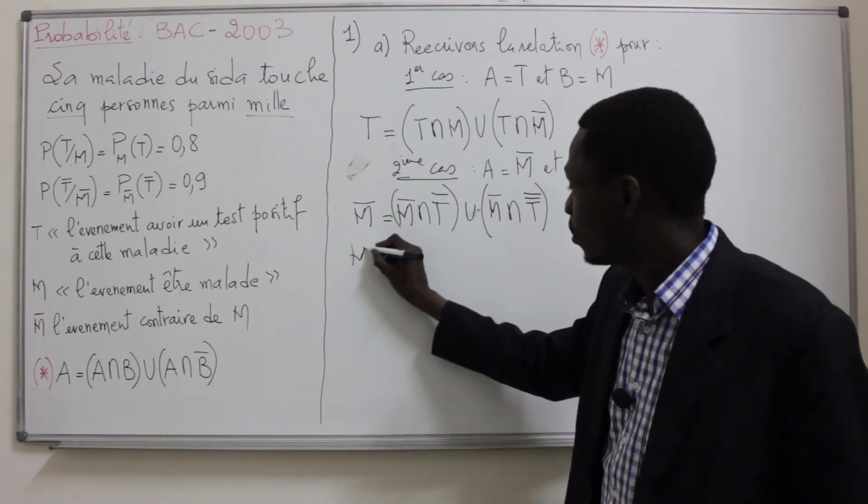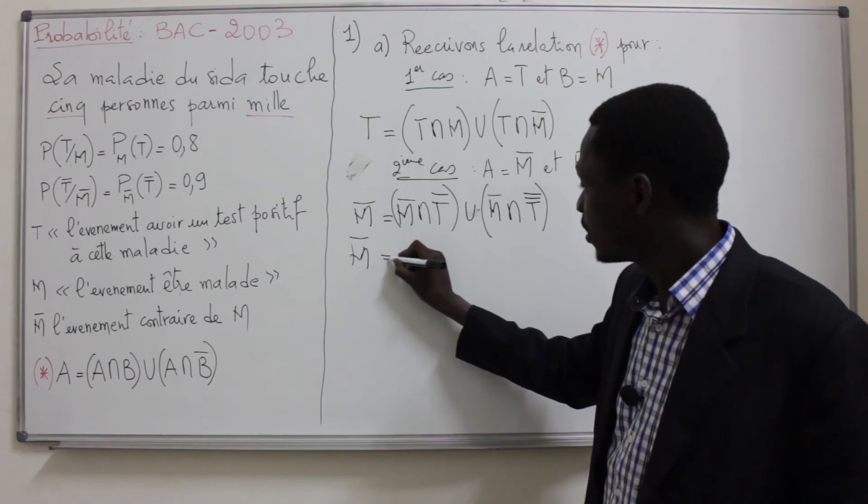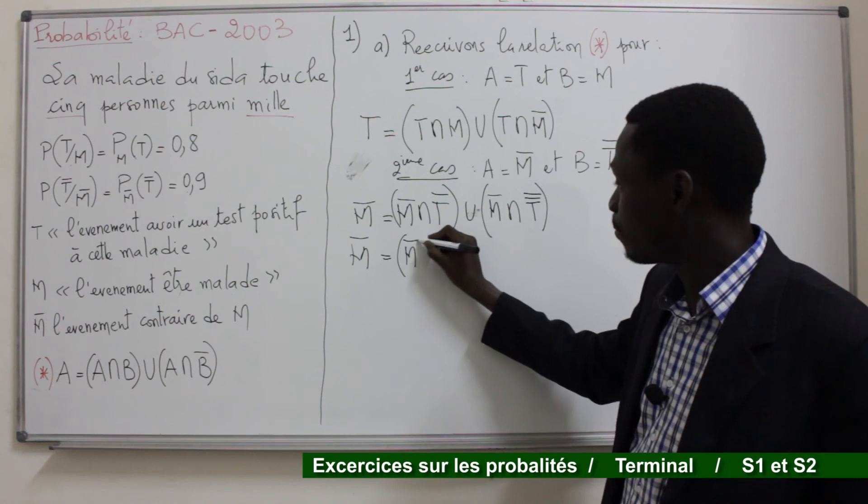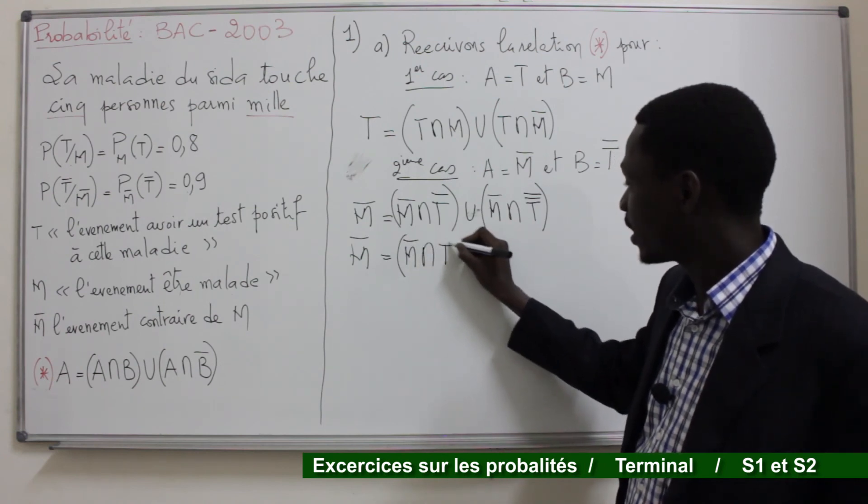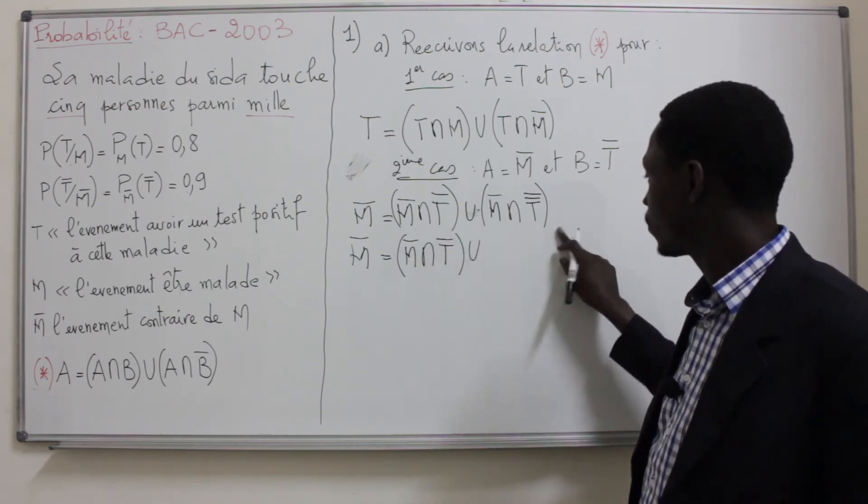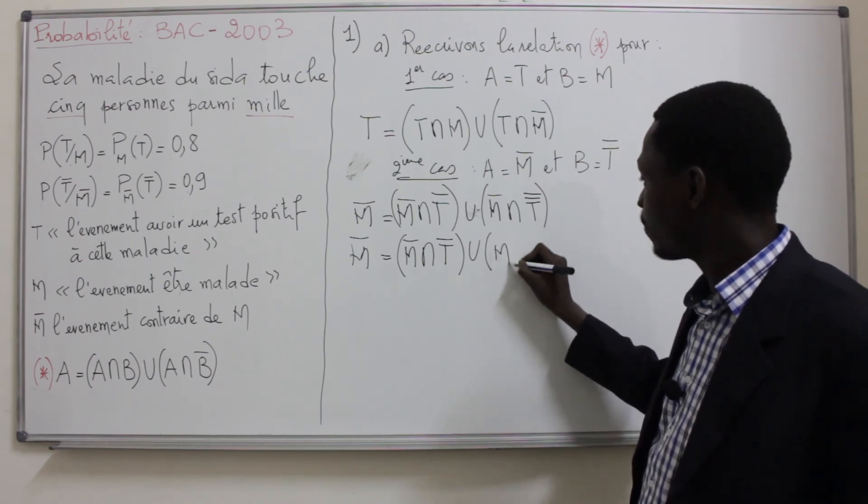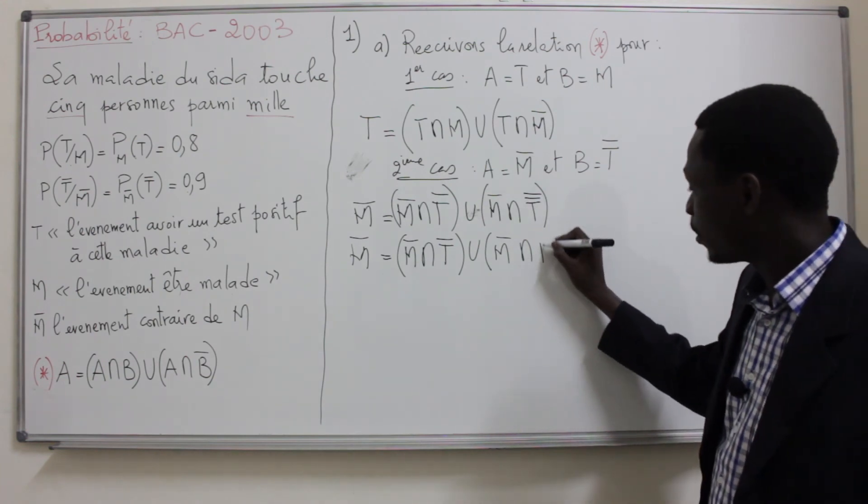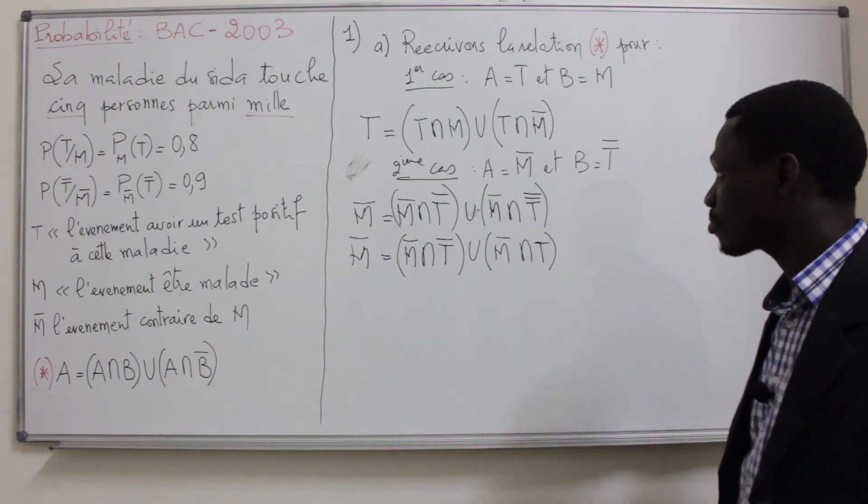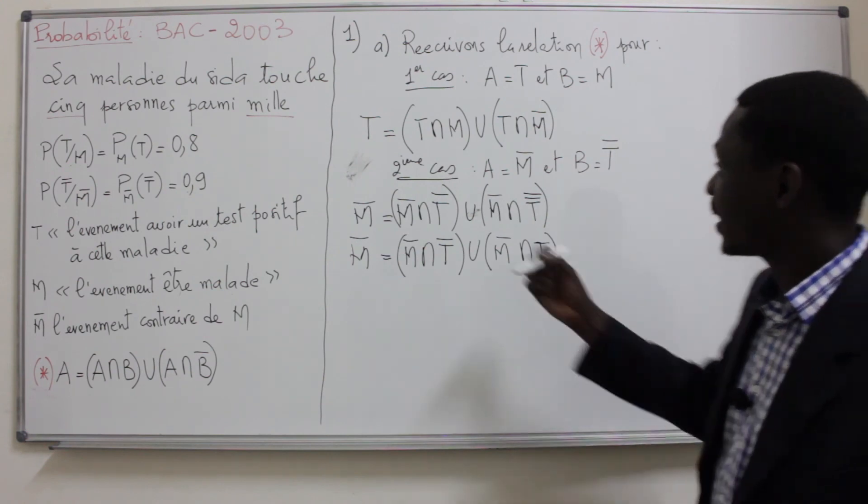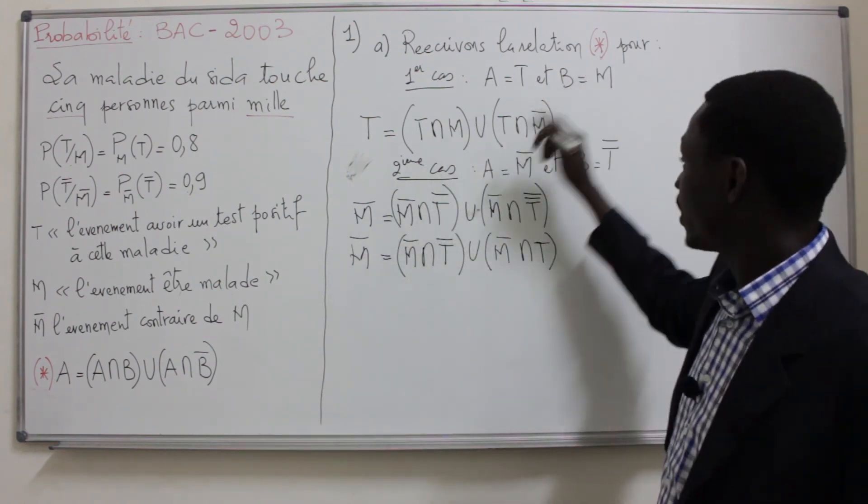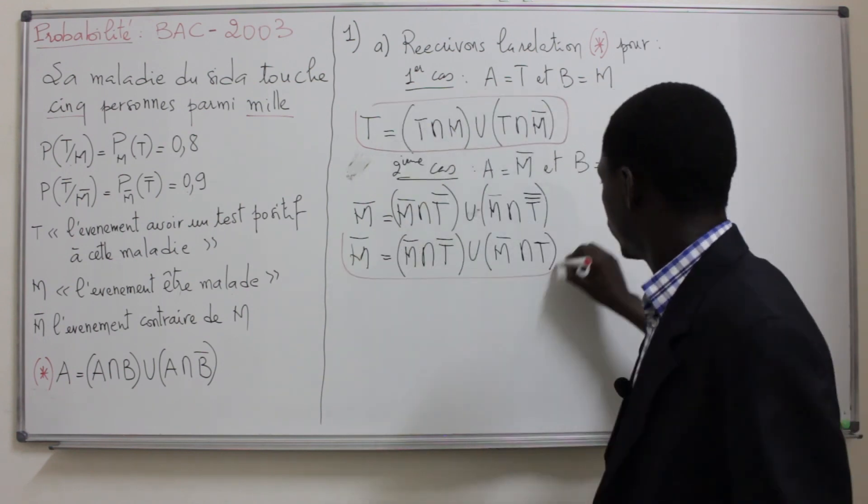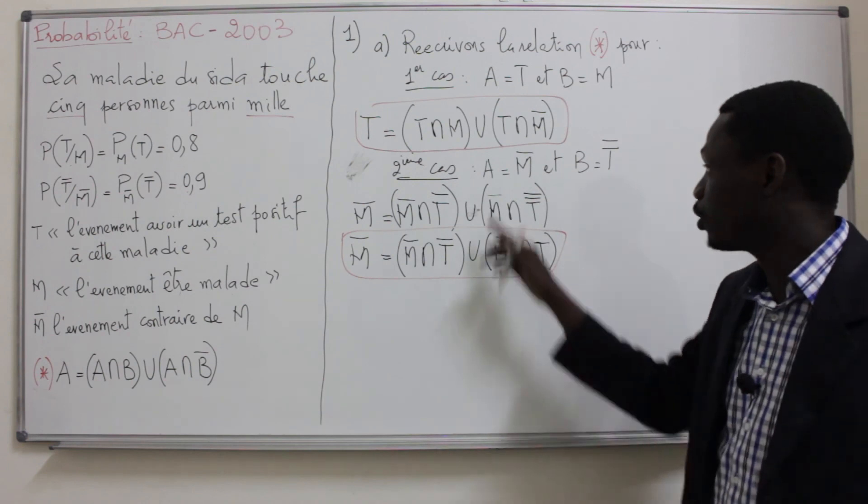On réécrit la relation. Donc on aura M̄ = M̄ ∩ T̄ union M̄ ∩ T̄̄. Alors T̄̄, c'est tout simplement T. Donc on vient de réécrire la relation étoile de deux façons différentes, suivant les valeurs de A et de B.